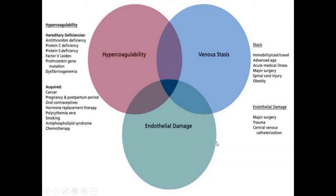The third cause of thrombosis is endothelial injury. It can be caused by major surgery, which causes endothelial damage, trauma to the endothelial wall, and central venous catheterization.